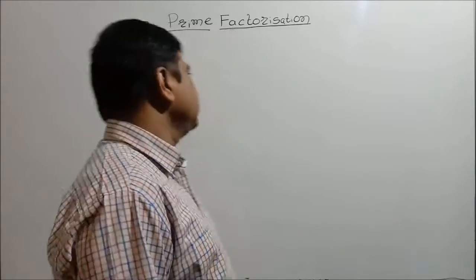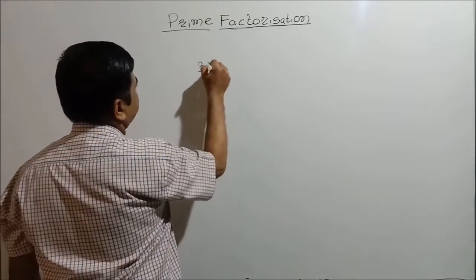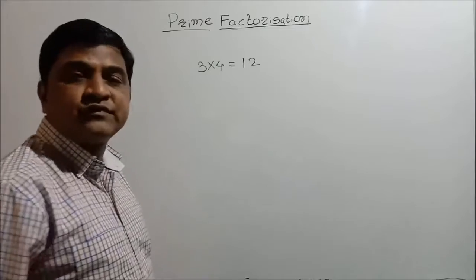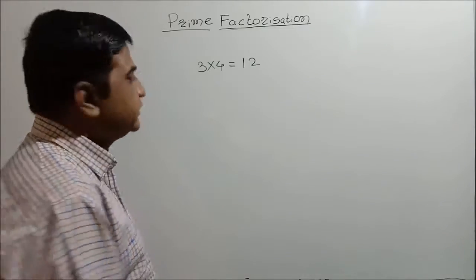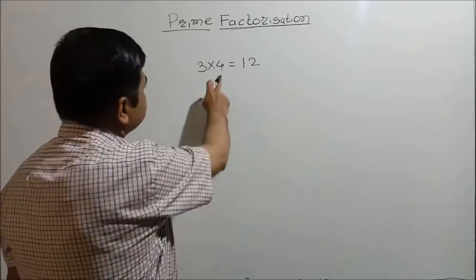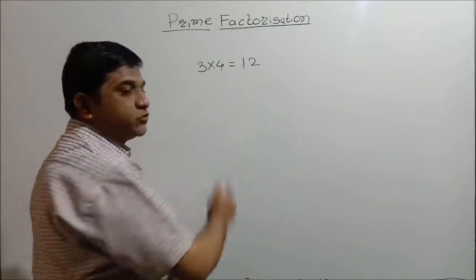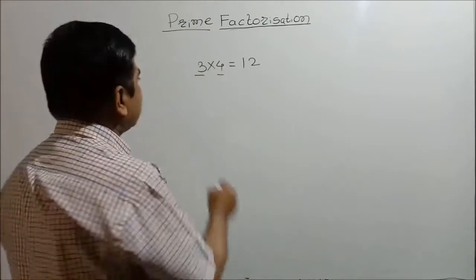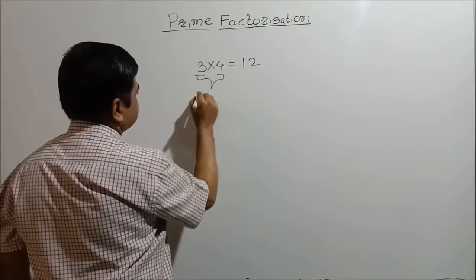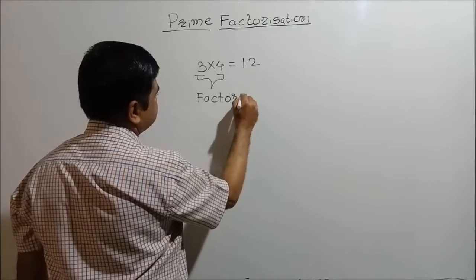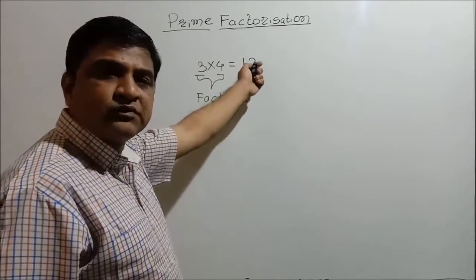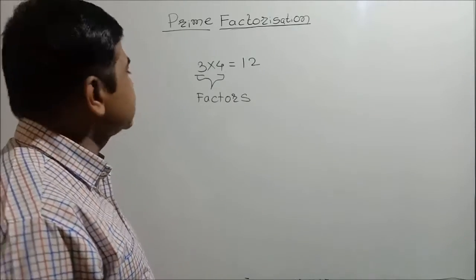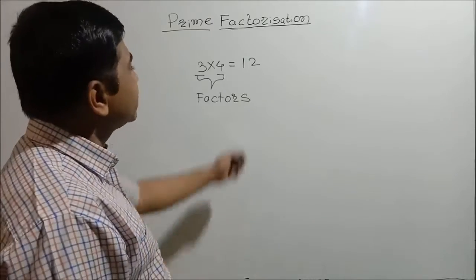We will start with one basic thing. If I multiply 3 with 4, we will get the product 12. This is known as the multiplication of 3 and 4, or the product of 3 and 4. In this, 3 is known as the multiplicand and 4 is known as the multiplier. The result 12 is known as the product. But this 3 and 4 are also known as factors — they are the factors of the product 12.